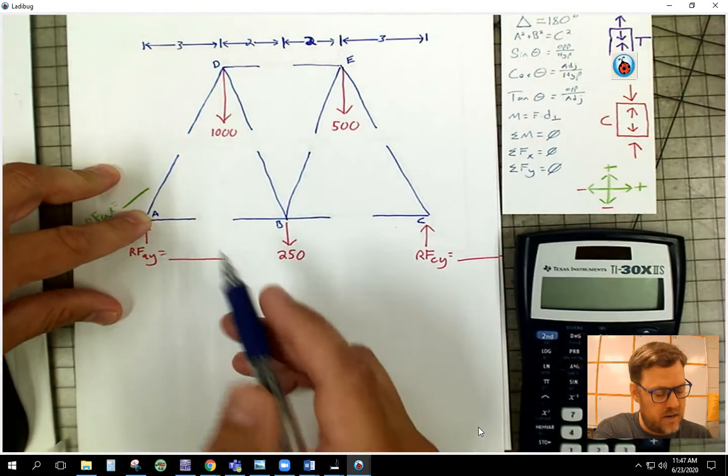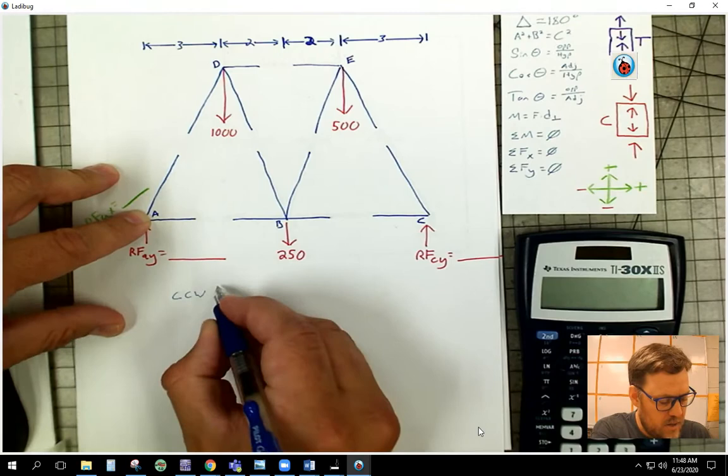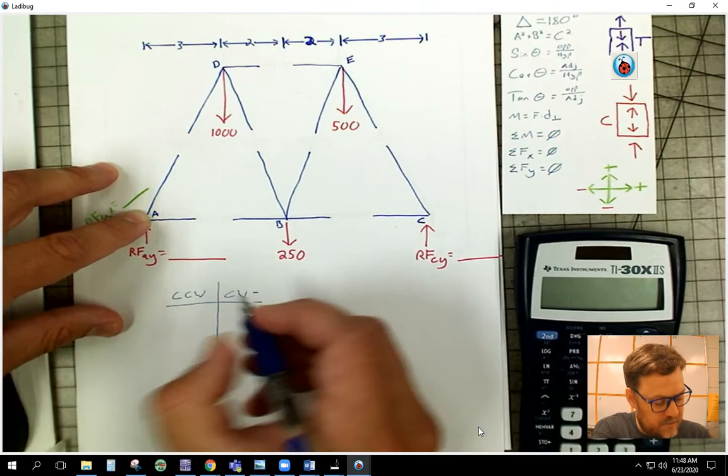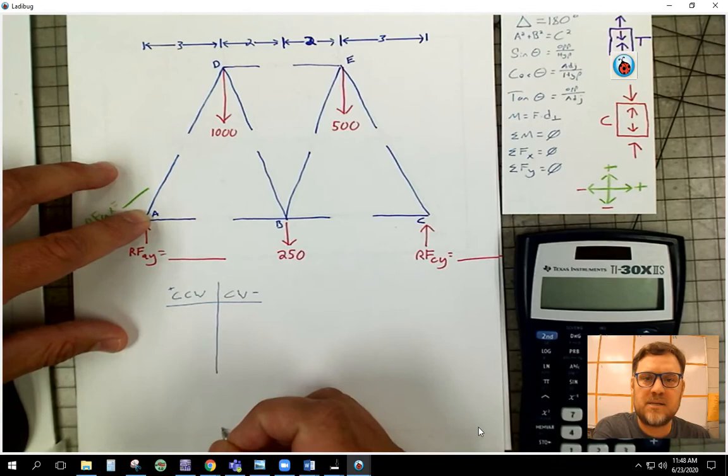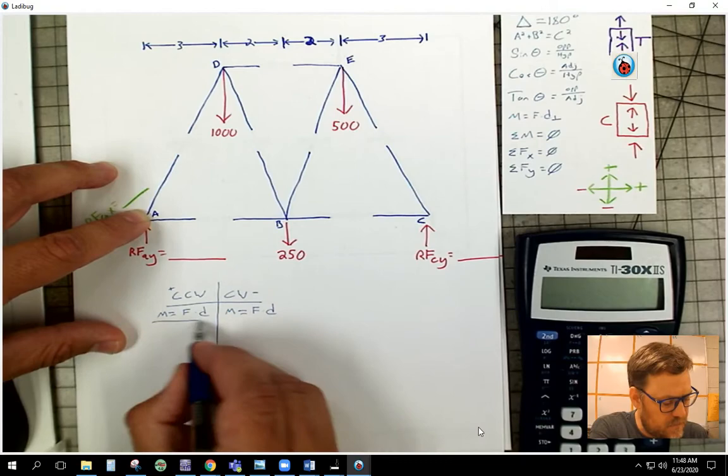So let's start out here. The first thing I want to remember is that when we're summing moments, we're talking about counterclockwise or clockwise. I'm going to start with a T chart and say counterclockwise and then clockwise, remembering that clockwise is typically negative and this is positive. We don't really think about it in terms of negative positive because it makes the math a little easier. But just so you know, moment is force times distance.